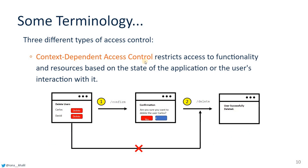The third type is context-dependent access control. For example, if a user wants to delete a photo, the developer creates a confirmation pop-up. If you confirm deletion, then the photo is deleted. This is a sequence: delete request, then pop-up, then deletion. If this sequence is broken or bypassed, that is a vulnerability. Context-dependent access control enforces rules based on the state or sequence of actions.